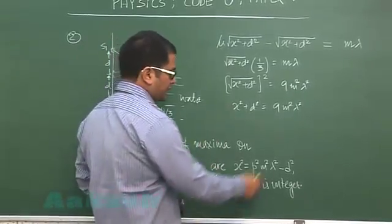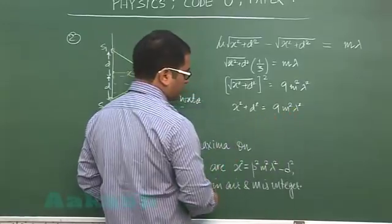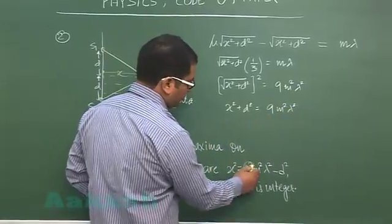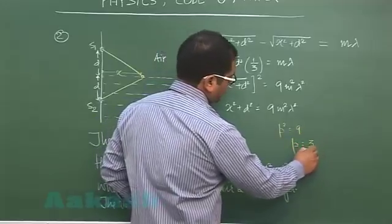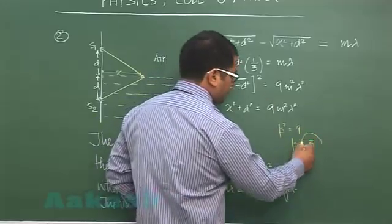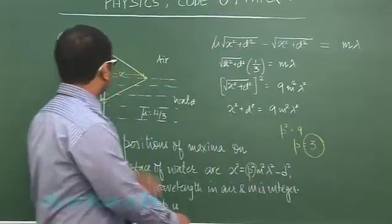Now if you make a comparison, you would see the coefficient of m square lambda square is 9, and here it's p square. So clearly p square is 9, and we'll be getting the value of p as 3. So 3 would be the answer for question number 2.